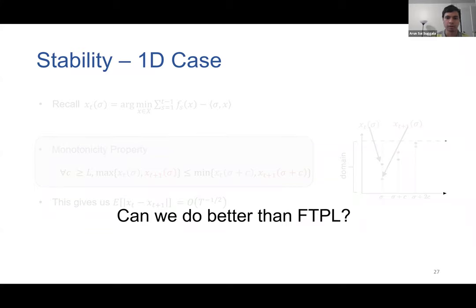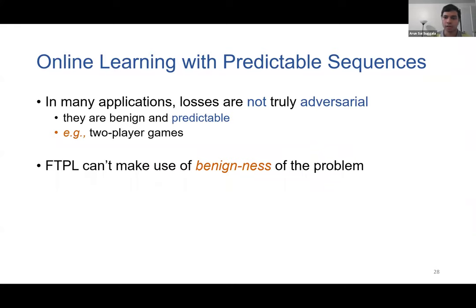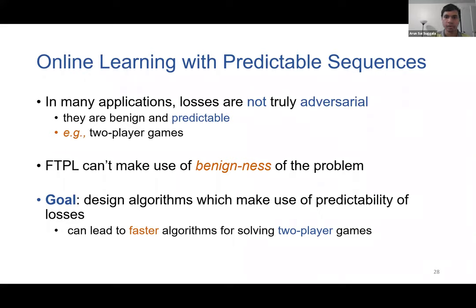In many applications of online learning, the loss functions we see are not truly adversarial — they are often benign and predictable. One example is the application of online learning to two-player games, where the sequence of loss functions seen by each player is not truly adversarial, because the other player is actually helping you converge to a Nash equilibrium rather than being adversarial. Algorithms such as FTPL cannot exploit this benignness to achieve better regret bounds. We would like to design algorithms that can use the predictability of loss functions to achieve better regret guarantees, leading to faster convergence in two-player games.